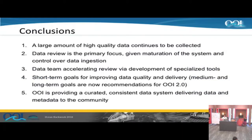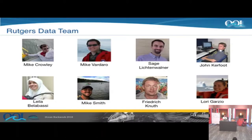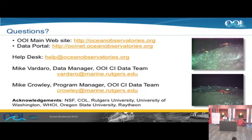In conclusion, there's a large amount of high-quality data coming into the system. Data review needs to be the primary focus going forward, and data review is accelerating as these tools are now available. There are short-term and long-term goals for improving the system, and OOI is providing a curated, consistent system for delivering data and metadata to the community. Hopefully you'll find it useful and help us improve it. That's the data team at Rutgers through September 28th.